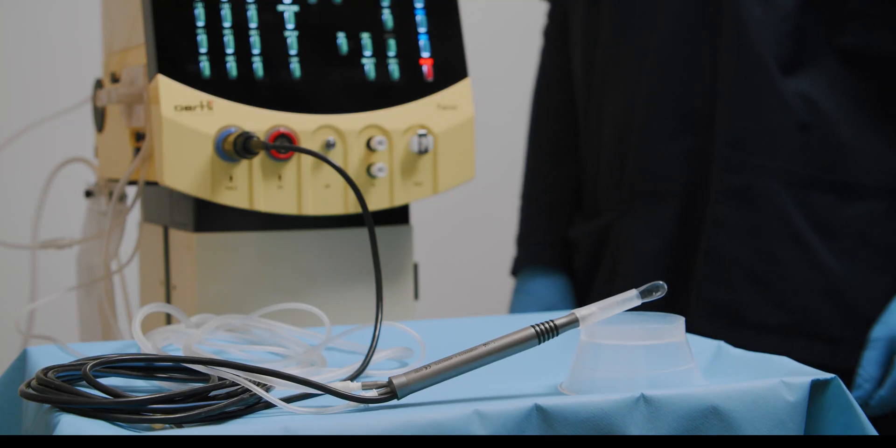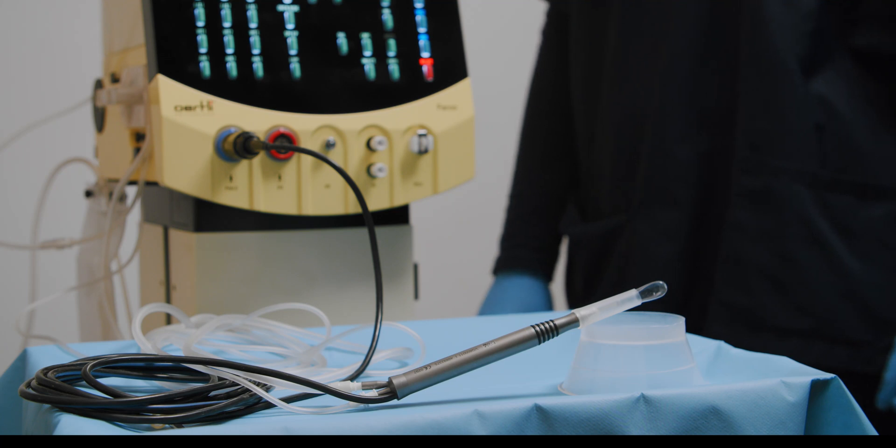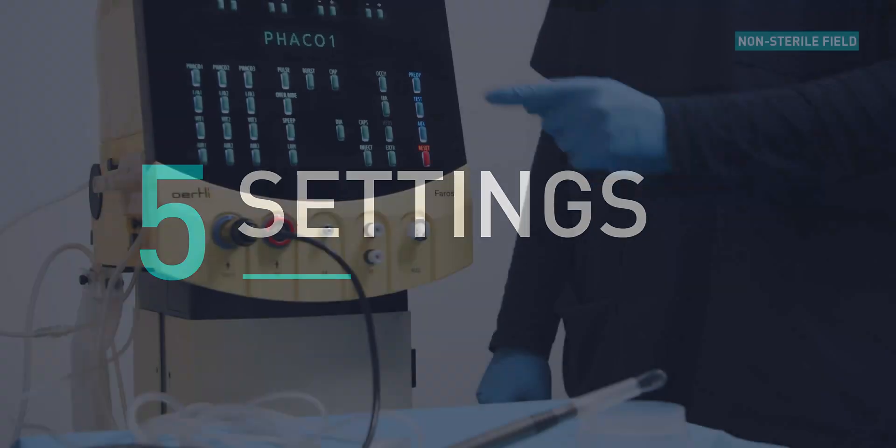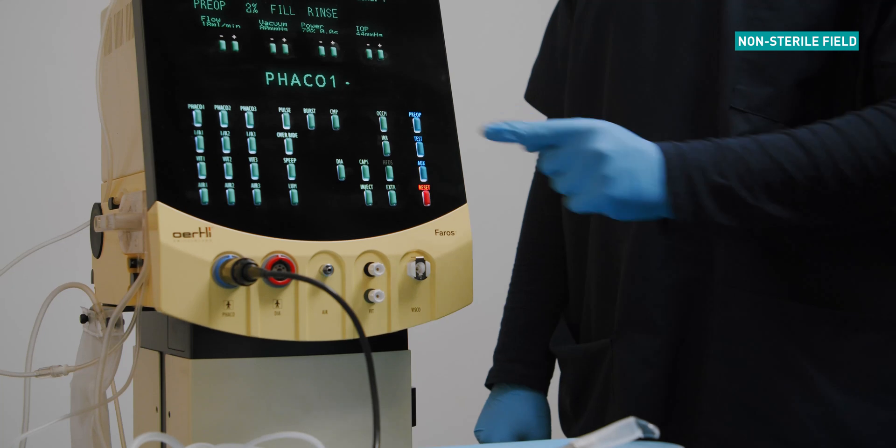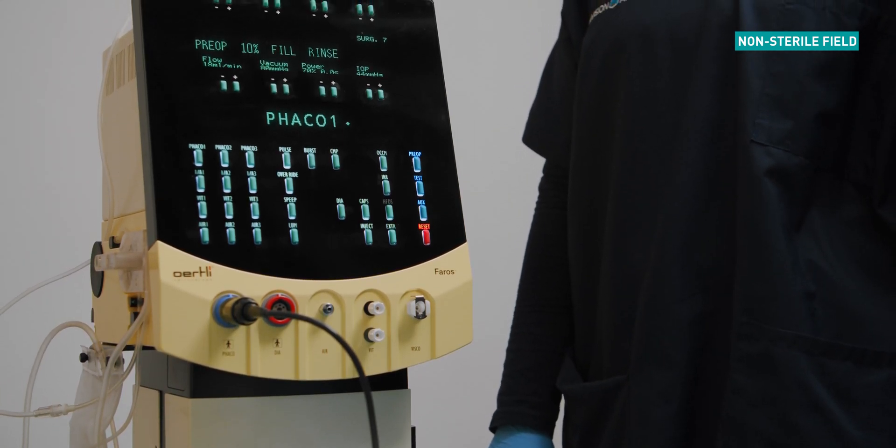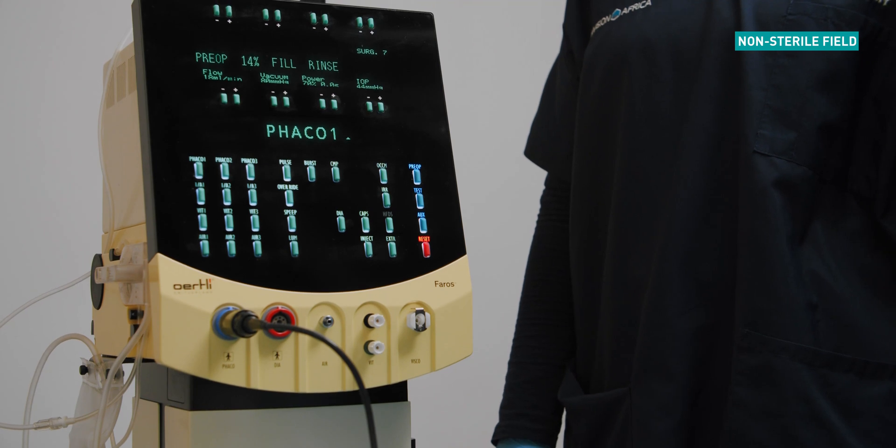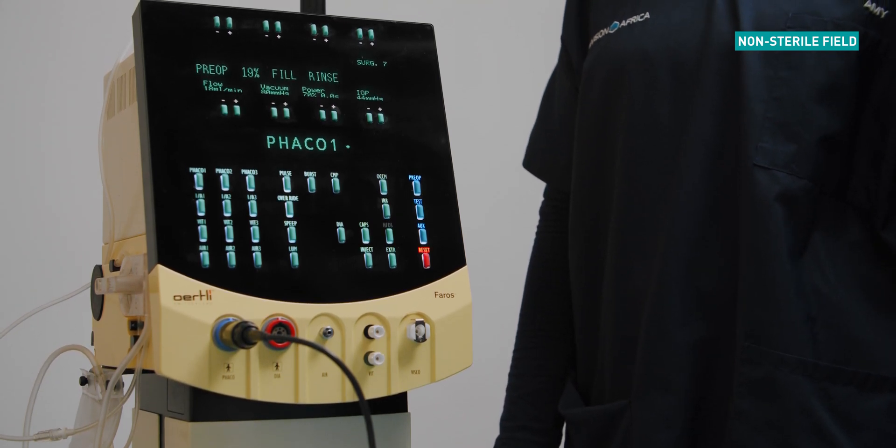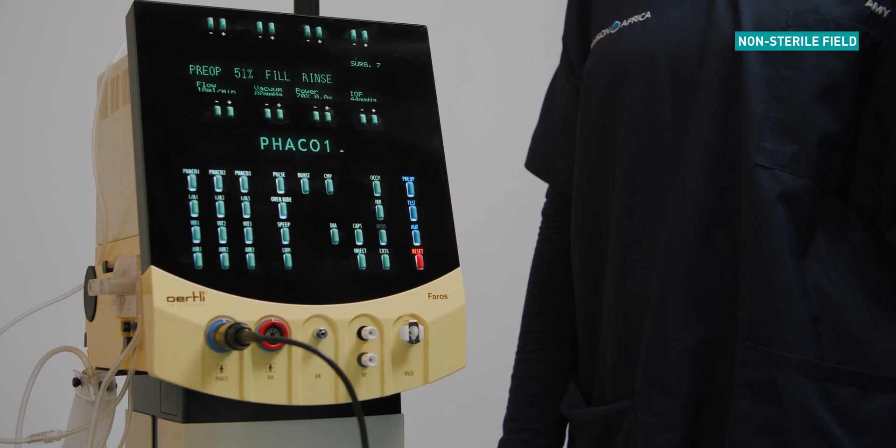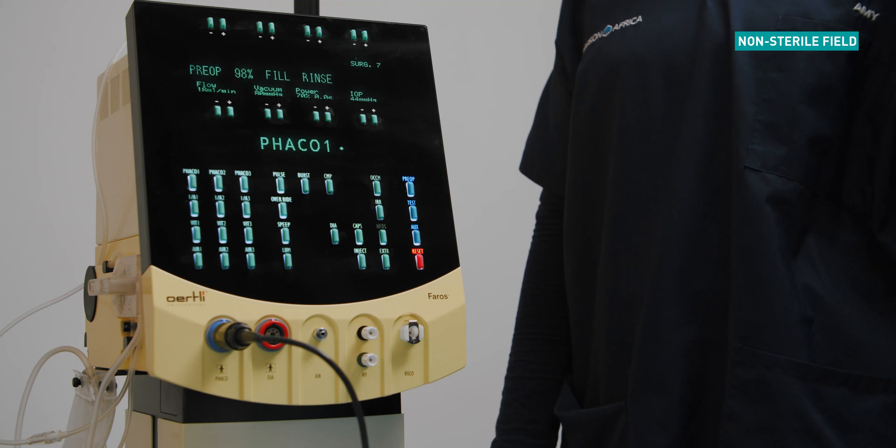To ensure optimal priming, place the handpiece at a 45 degree angle. Press the pre-op button to start the priming cycle. Allow the pre-op cycle to complete fully, approximately one minute. The phaco test will start automatically after a complete pre-op cycle. Allow the machine to run through the cycle up to 100%. The device is now ready to use.